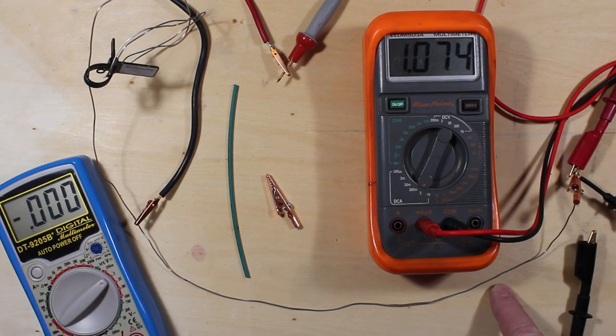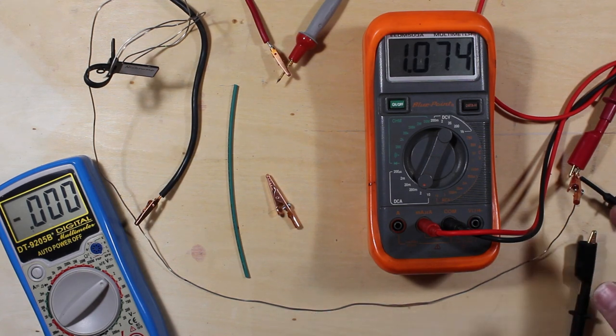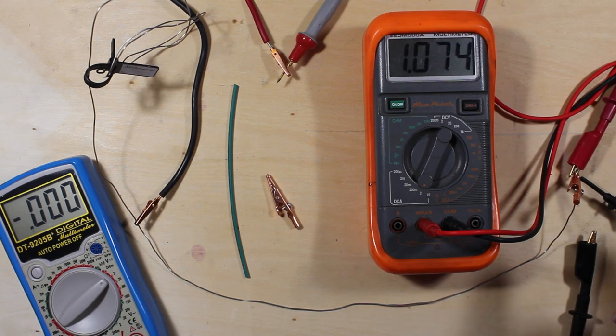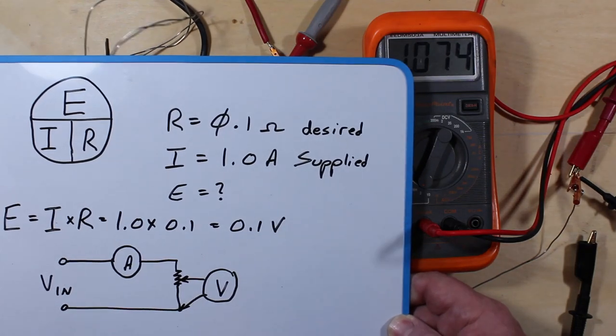One thing I do have is some nichrome wire here. I'm going to use this wire and use Ohm's Law and figure out how much one tenth of an ohm of this is. Here's how we're going to basically do that.